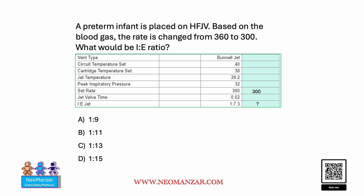Pause the slide and take a look. You see here that the set rate was 360 and it was changed to 300. So what will happen to the I:E ratio? Would it increase? Would it decrease?